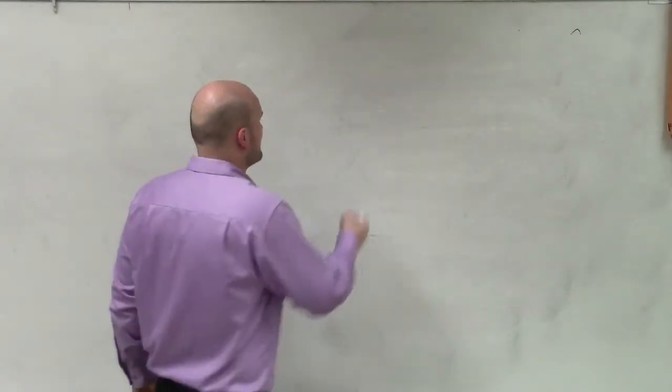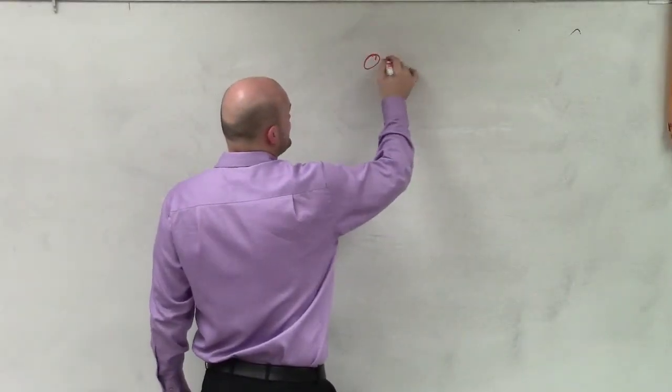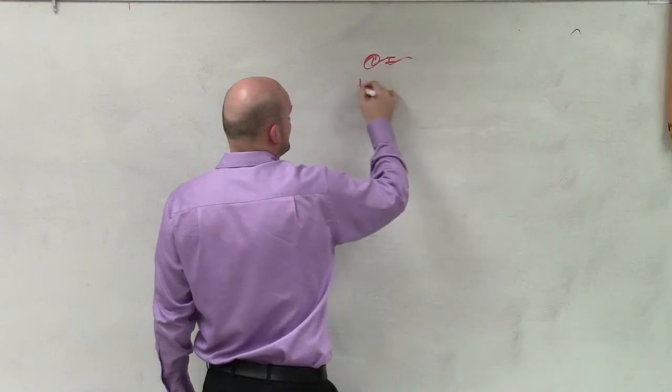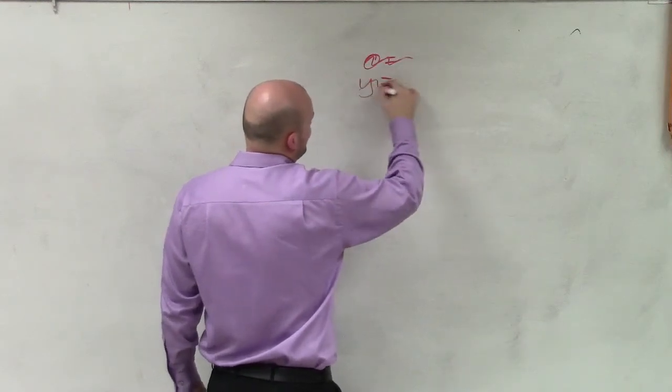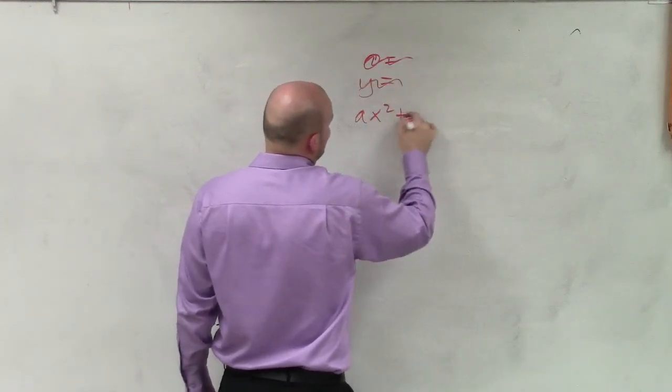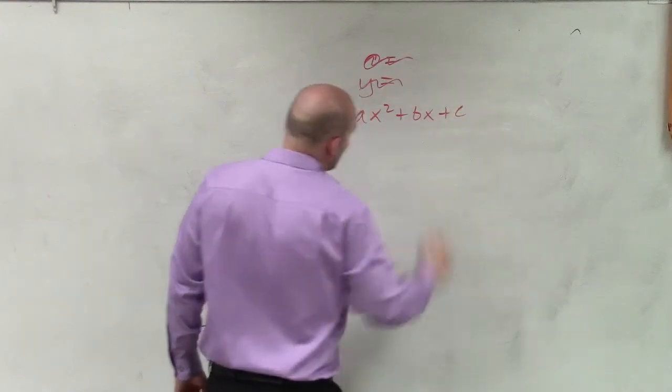All right, so what is a perfect square trinomial? Well, the basics of a perfect square trinomial is going to be ax squared plus bx plus c.